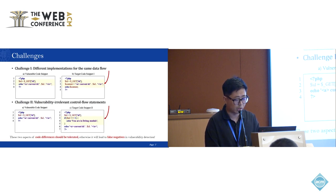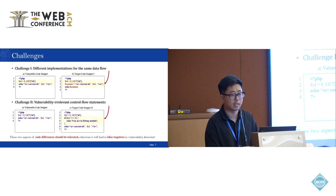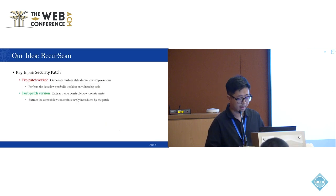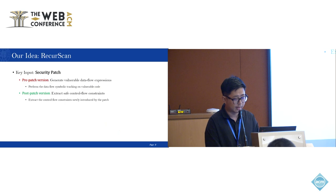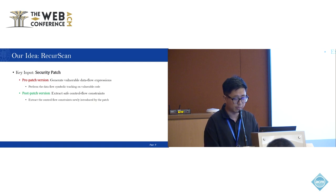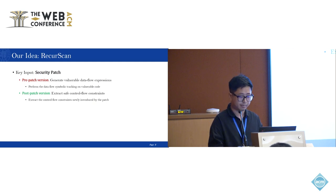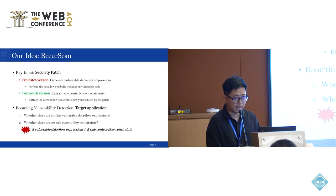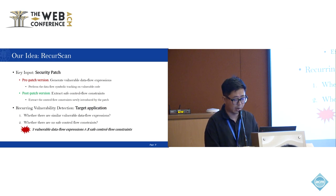On one hand, the approach needs to tolerate different implementations of the same data flow. On the other hand, the approach needs to be unaffected by vulnerability-irrelevant control flow statements. In light of this, we propose that Rikerscan takes security patches as input and generates known vulnerability signatures from two aspects. For the pre-patch version, Rikerscan performs data flow symbolic tracking on vulnerable code to generate vulnerable expressions. For the post-patch version, Rikerscan extracts the control flow constraints newly introduced by the patch and treats them as safe control constraints. During recurring vulnerability detection, Rikerscan determines whether there is a highly similar vulnerable data flow expression in the target application. If they are not protected by any safe control flow constraints, Rikerscan will report a vulnerability.